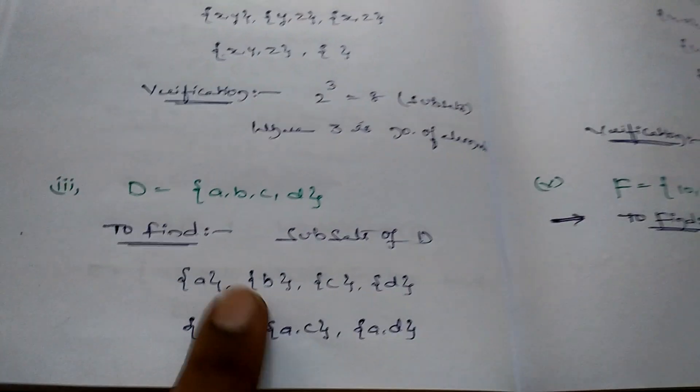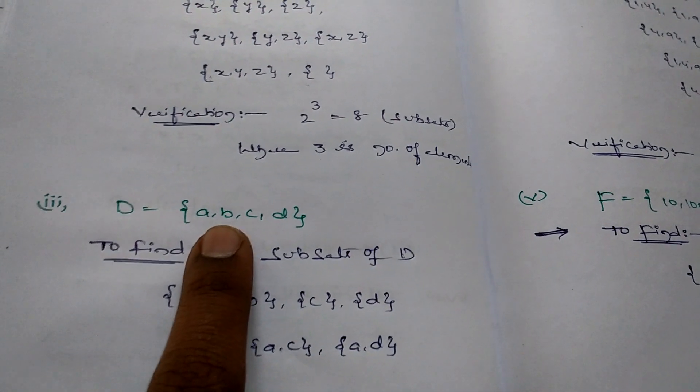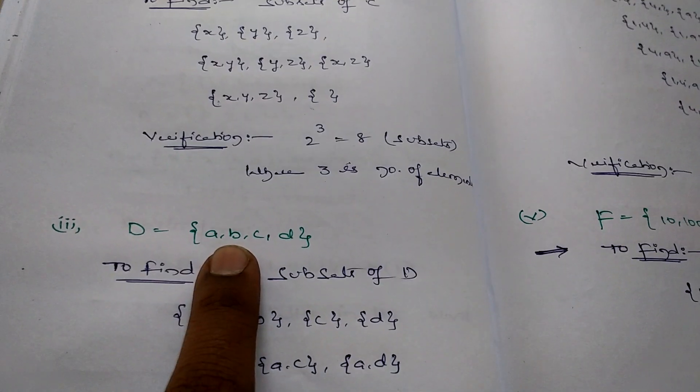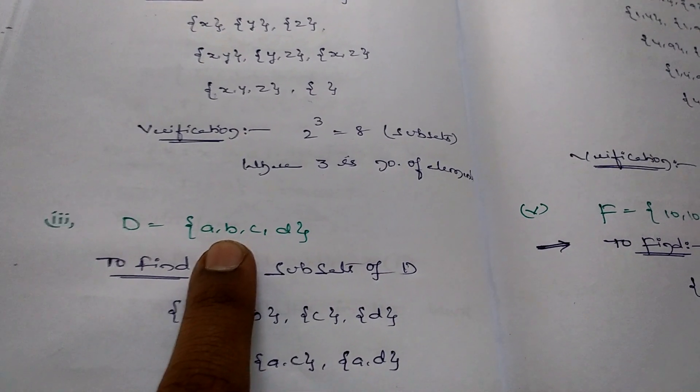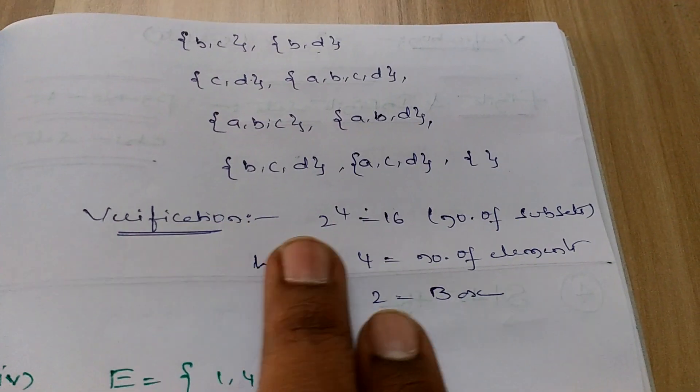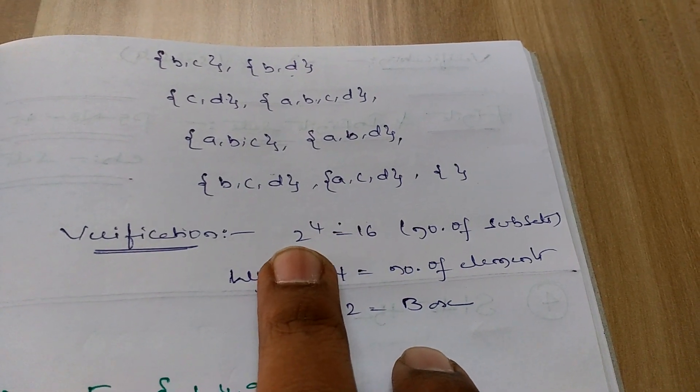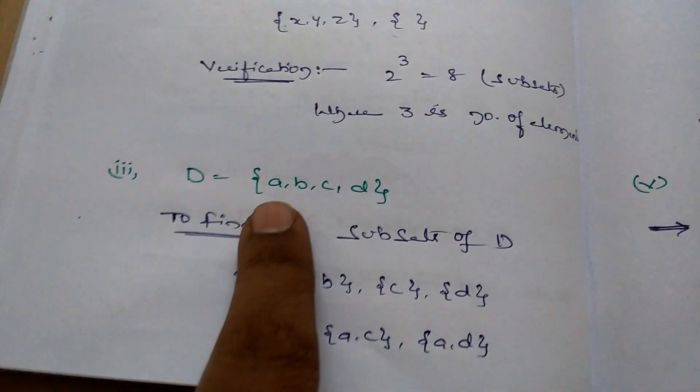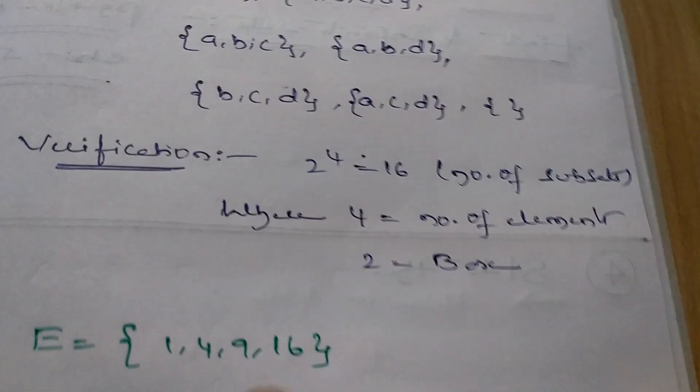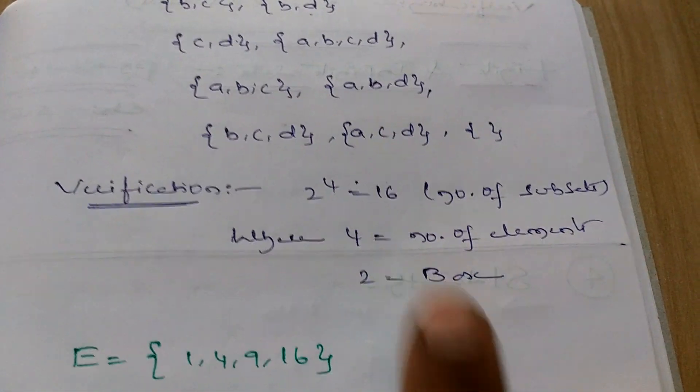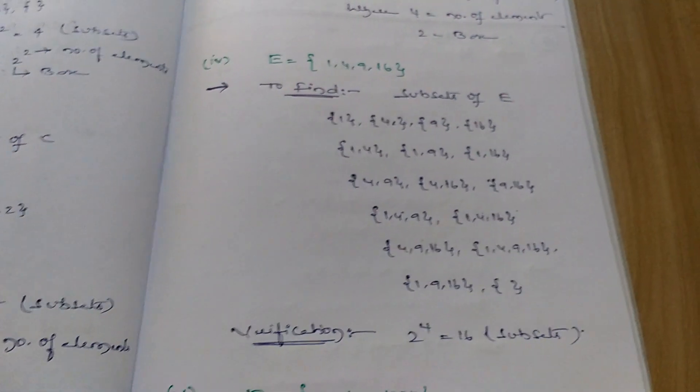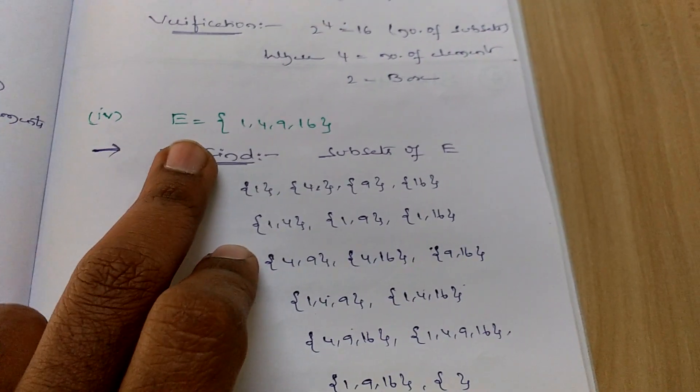When elements are 4 in the set, we get 16 subsets. This is the formula for verification purposes: 2^4, where 2 is the base and 4 is the number of elements. Coming to the fourth sum, what is given?